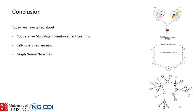Today we've talked about cooperative multi-agent reinforcement learning, self-supervised learning, and graph neural networks. We do hope you found that interesting, and we'll now welcome any questions.